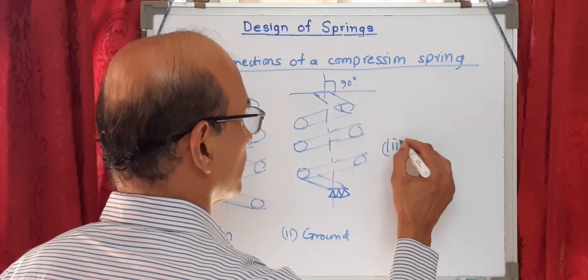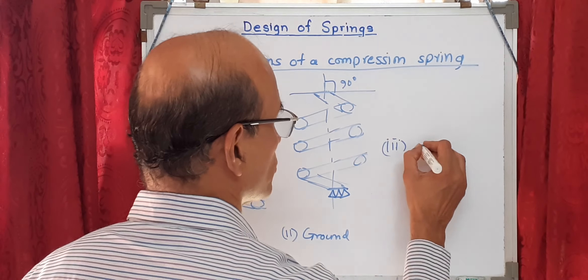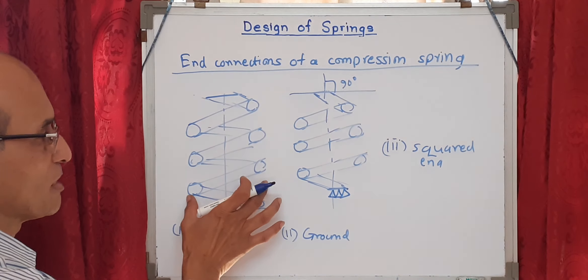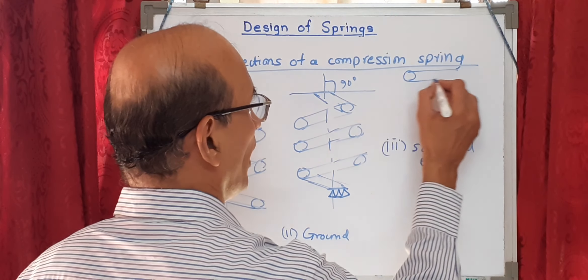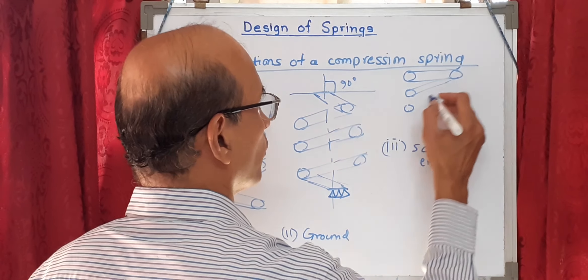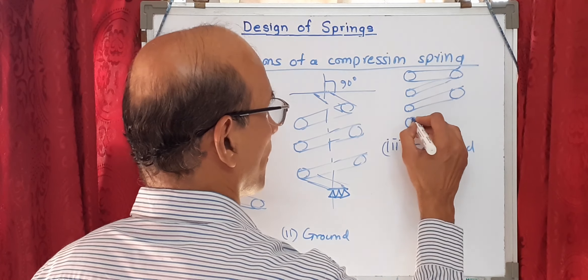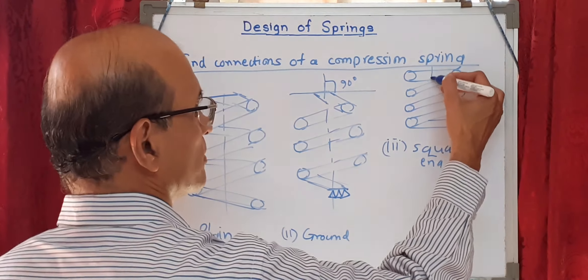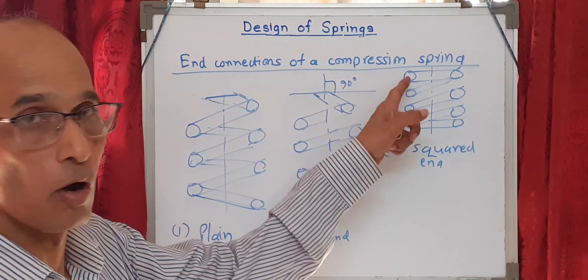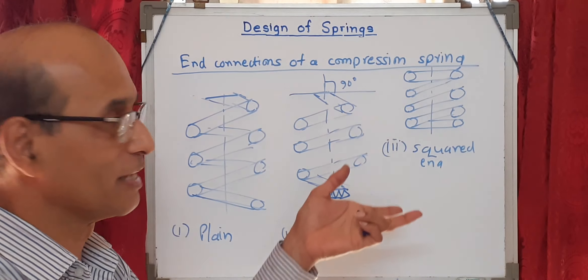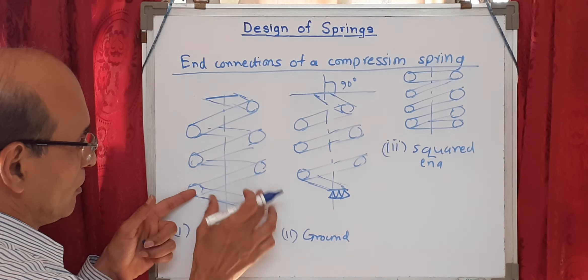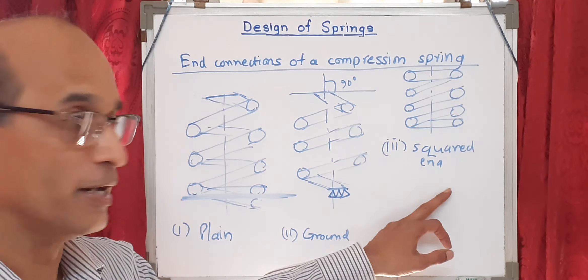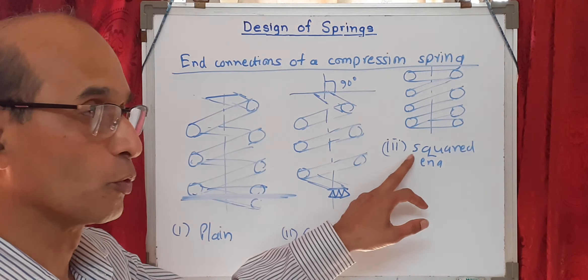The third type is the squared end. Here, the last coil is bent — not ground — so it becomes horizontal. The last coils, which were initially inclined, are turned and made straight so they become horizontal. This is called a squared end. So the four types so far are: plain end, ground end (by machining), and squared end.